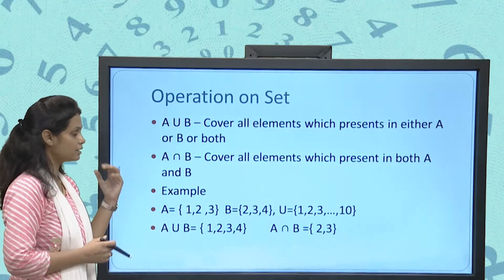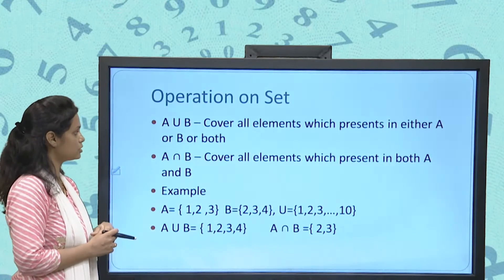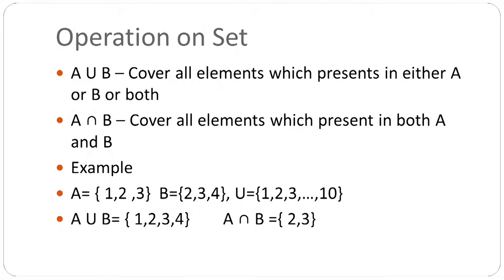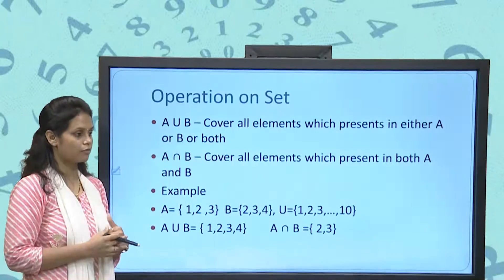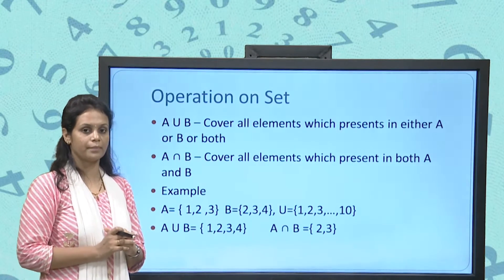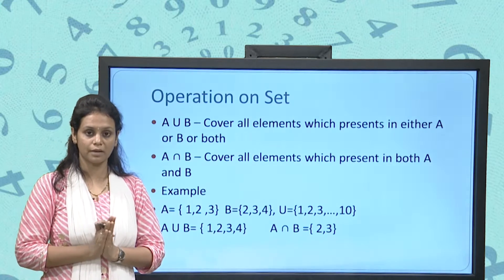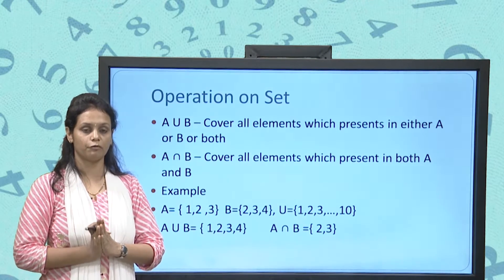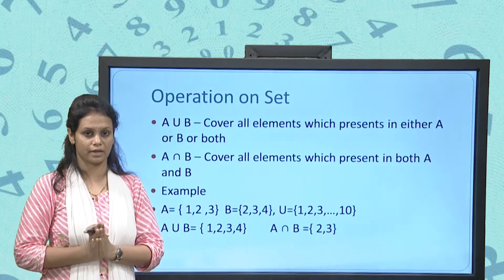The operations on a set are union, intersection, and complement. Union covers all elements present in A, in B, or in both. Intersection covers all elements that must be present in both A and B.